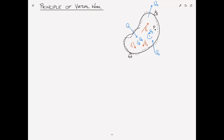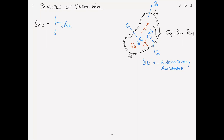If we consider a point within this body, p, there'll be some associated stress field, displacement, and strain field. The virtual displacements δuᵢ must be kinematically admissible — they must adhere to the geometric boundary conditions, where the variation of the displacement field is zero at the geometric boundaries. The external virtual work δWₑ can be written as the integral over the surface of Tᵢ δuᵢ ds, plus the contribution of the body forces: fᵢ δuᵢ dv.